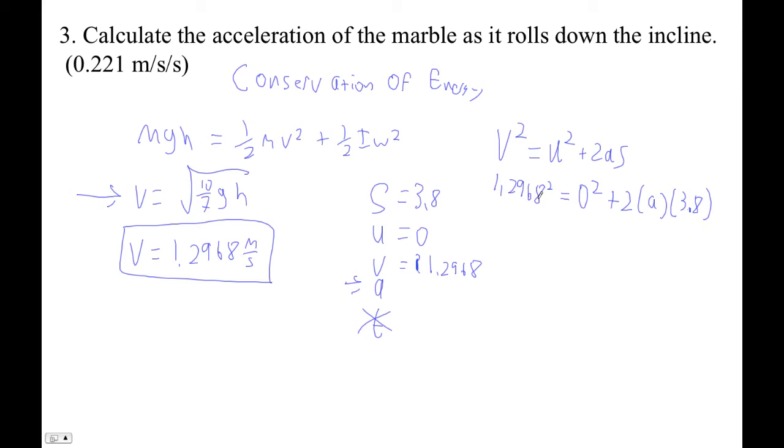So square that guy, divide by 2, divide by 3.8. And I'm getting that the acceleration was 0.22127 or something like that. Meters per second squared. Now we can only say 0.221. We only have three sig figs.